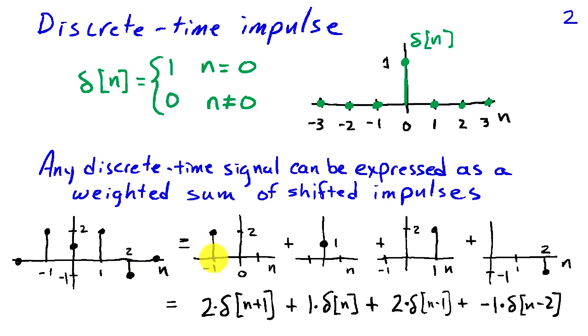I can write this signal as an impulse located at minus 1 of amplitude 2, and that would be 2 delta of n plus 1, plus an impulse at the origin of amplitude 1, so that's 1 times delta of n, plus an impulse at n equals 1 of amplitude 2, or 2 times delta of n minus 1, plus a value of minus 1 at n equals 2, or minus delta of n minus 2.